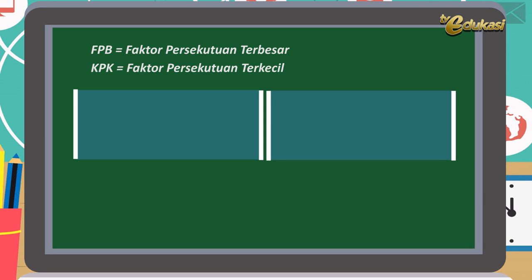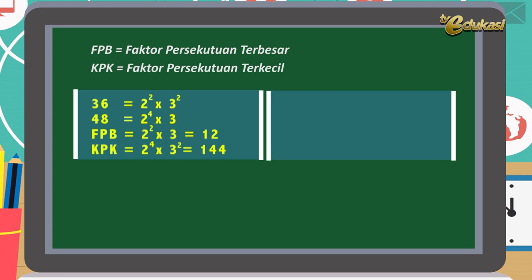36 sama dengan 2 pangkat 2 dikali 3 pangkat 2. 48 sama dengan 2 pangkat 4 dikali 3. FPB sama dengan 2 pangkat 2 dikali 3 sama dengan 12. KPK sama dengan 2 pangkat 4 dikali 3 pangkat 2 sama dengan 144.